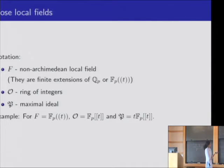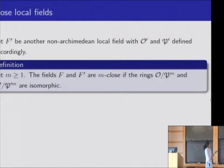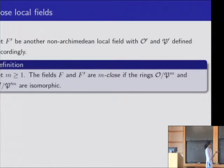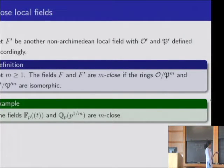To define close local fields, we choose two non-Archimedean local fields with ring of integers O and P, and O prime and P prime defined accordingly. We say that the fields F and F prime are m-close if O mod P^m and O prime mod P prime^m are isomorphic. An example is the field of Laurent series in one variable and Q_p(p^{1/m}) are m-close.